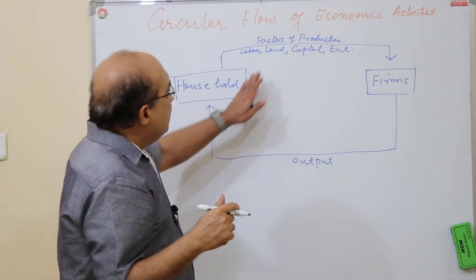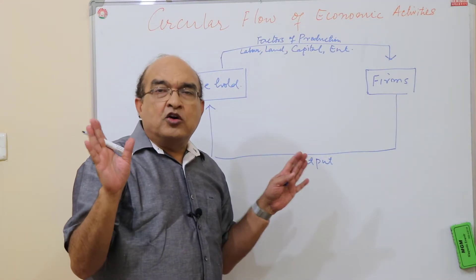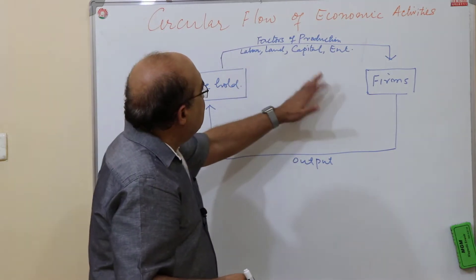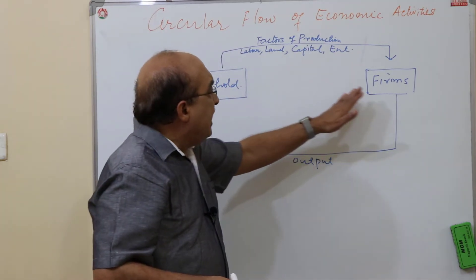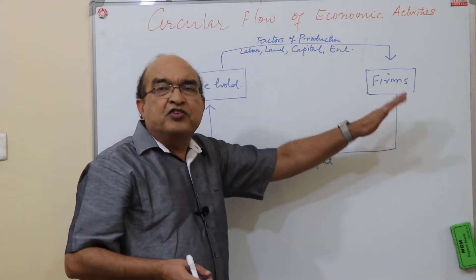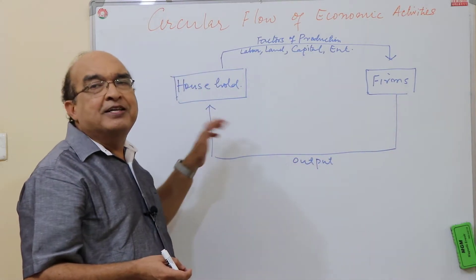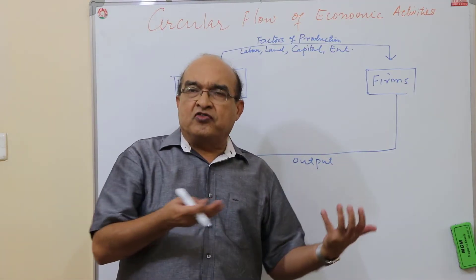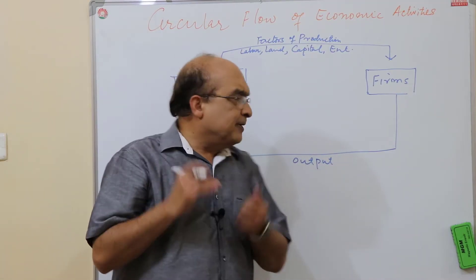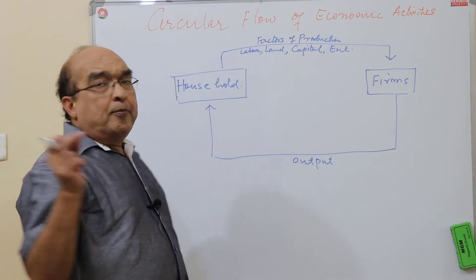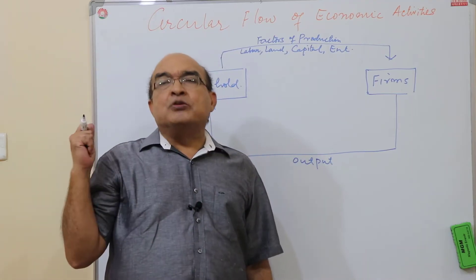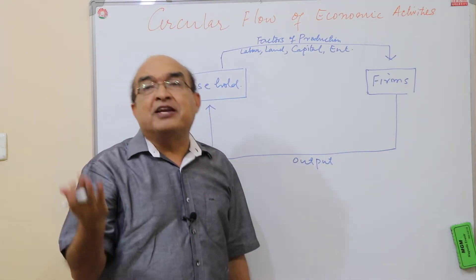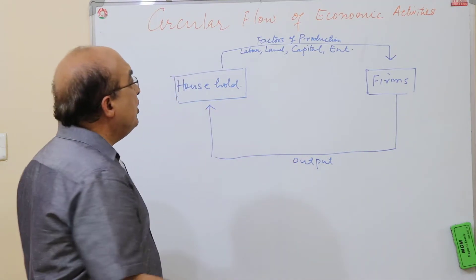This is the real activity going on in the economy: the household supplies the firm with the factors of production and the firms produce output which will ultimately be consumed by the households themselves. The households themselves are the owners of the various factors of production. Now money comes into the picture — this is the real flow. Let us now consider the monetary flow.